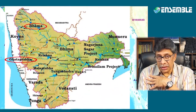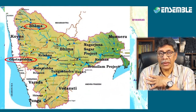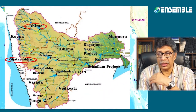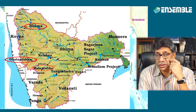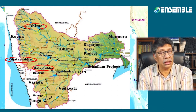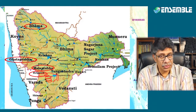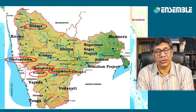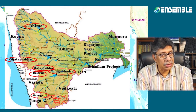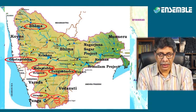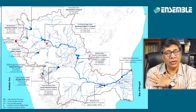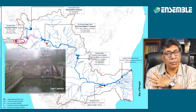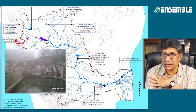Ghatprabha and Bhima originate from Maharashtra in the Western Ghats, while the Malaprabha originates from the Karnataka-Belgaum district. The Tungabhadra rises north of Shimoga in Karnataka.